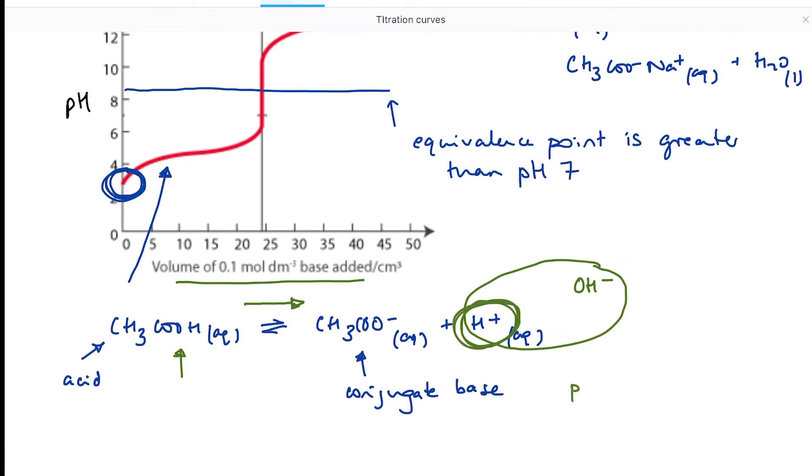Now pH is equal to minus the log of the hydrogen ion concentration. So if the hydrogen ion concentration isn't changing and then changes very slowly, the pH will also change very, very slowly to start with.